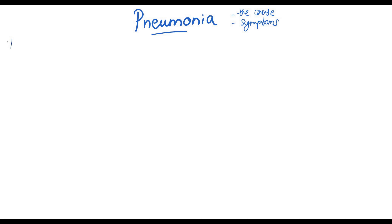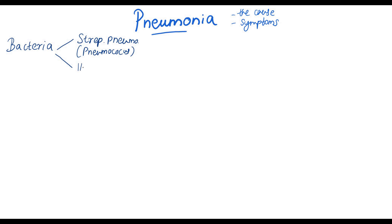Pneumonia is commonly caused by bacteria. The most common bacteria that can cause pneumonia is the Streptococcus pneumoniae, commonly known as the pneumococcus, and the Haemophilus influenzae type B, commonly known as the Hib. Please do not confuse Haemophilus influenzae with flu — even though it has 'flu' in it, this is a bacteria, not a virus like flu.